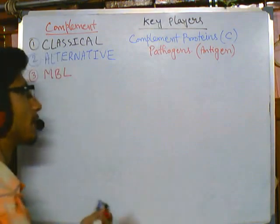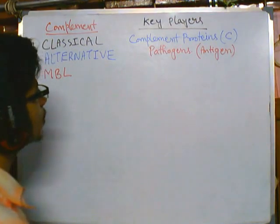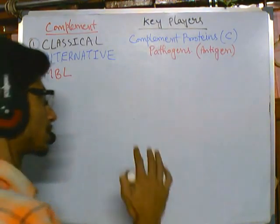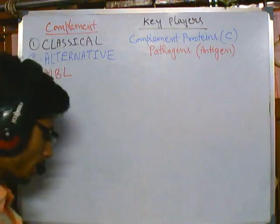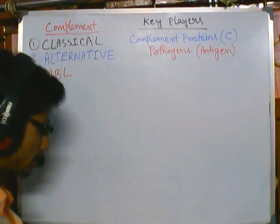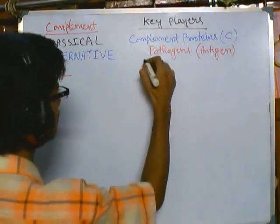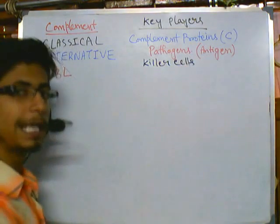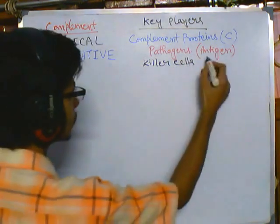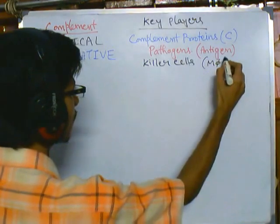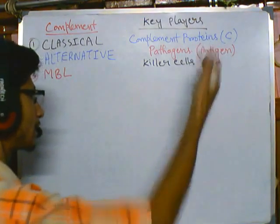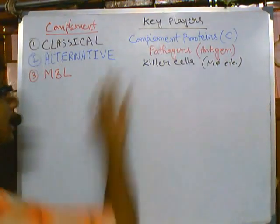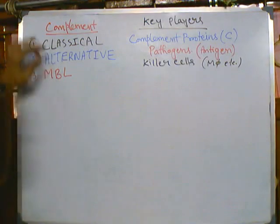We also need some other cells of the immune system — the killer cells. The killer cells of the immune system include macrophages, dendritic cells, and so on. We need these three key players for any kind of complement system.